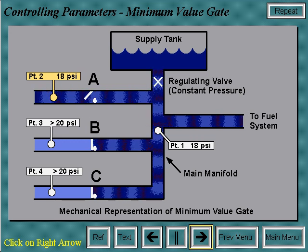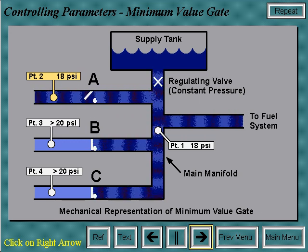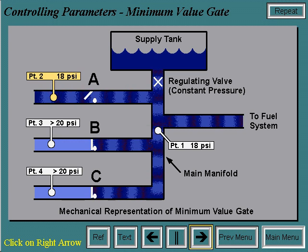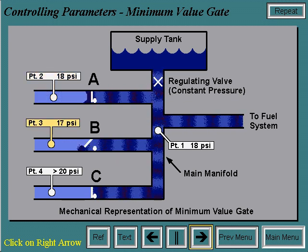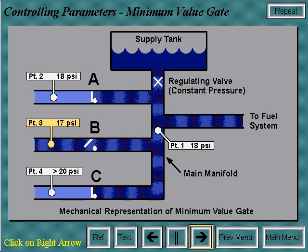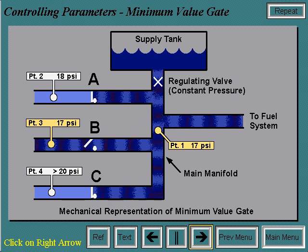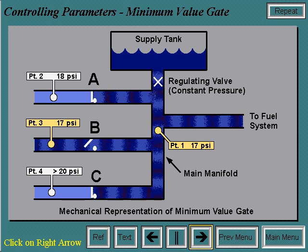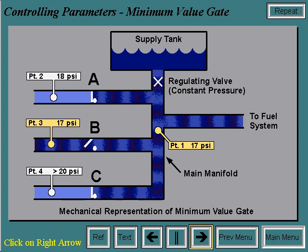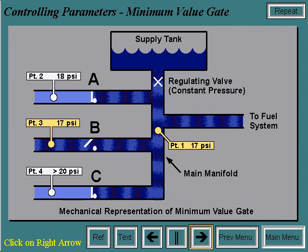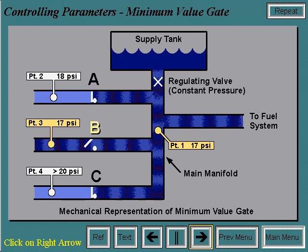As the operating conditions change, the pressure requirements at points 3 and 4 change. As the pressure at point 3 drops below 18 psi — for example, 17 psi — the manifold pressure will be brought down to 17 psi, causing check valves A and C to close and check valve B to open. Therefore, system B is now controlling.